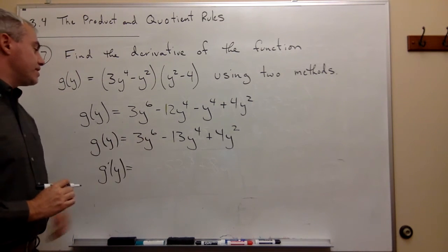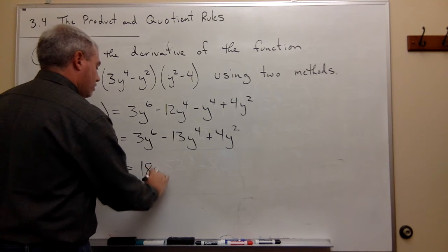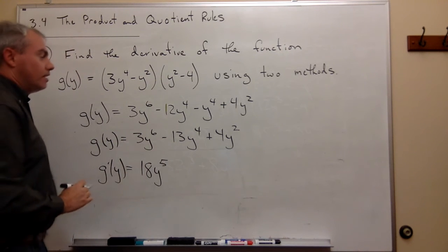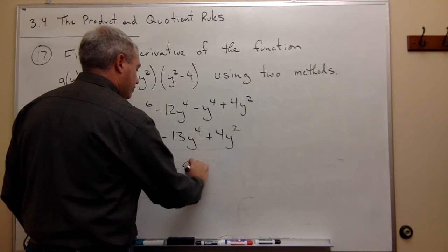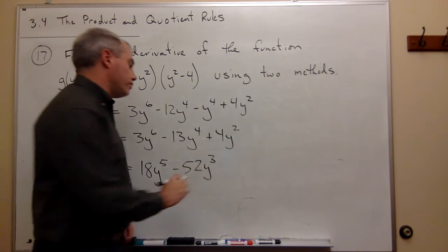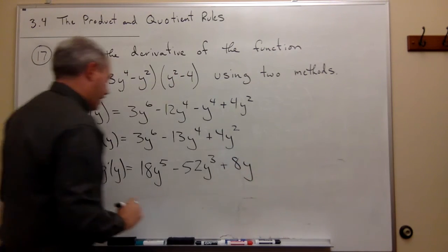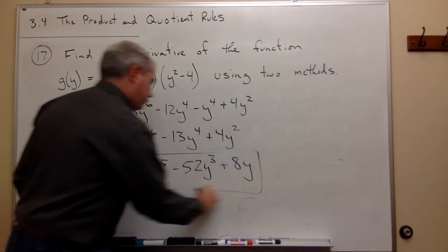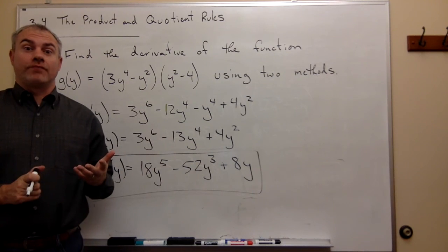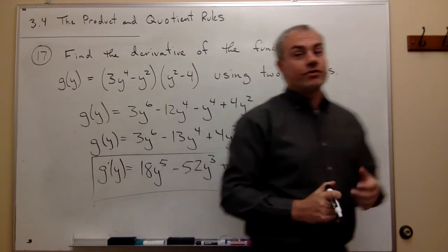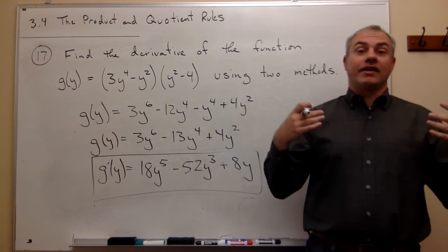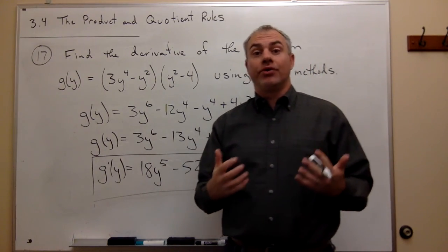3 times 6 is 18, so we get 18y^5. 4 times 13 is 52, so I get -52y^3. And then 4 times 2 is 8, so I get +8y, which, if you look back in the video, is exactly what we had before. So it doesn't matter which way you do it, you can use the product rule in this case, you can multiply it out using foil, and then take the derivative after multiplying it out. Both do the same thing.